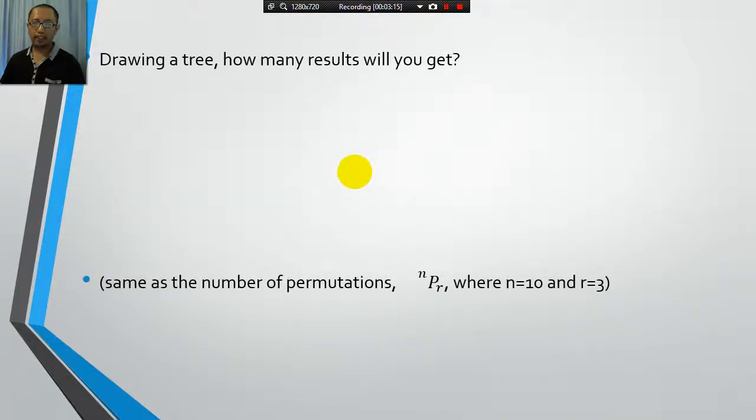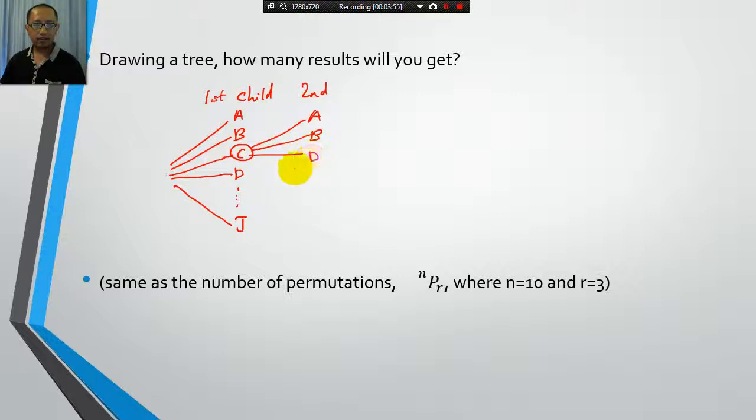So let's draw a tree. Let's see if we can solve the problem by doing the same thing as solving a permutation problem. Right, we pick our first child. First child and we can pick A, B, C, D, all the way to J. Okay, and let's say the first person you pick was C, so then the second child you would have A, B, you can't pick C again, so let's go to D, E, all the way to J.